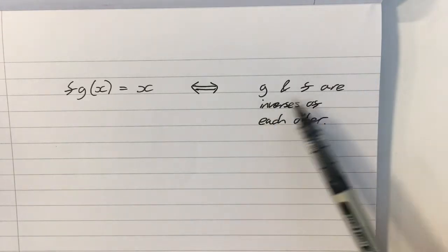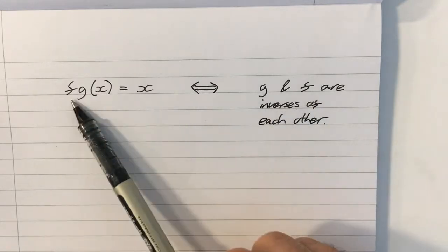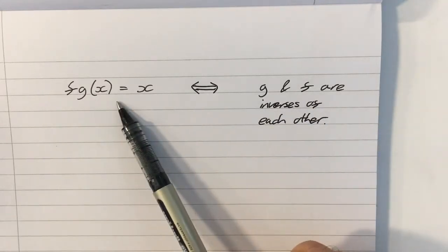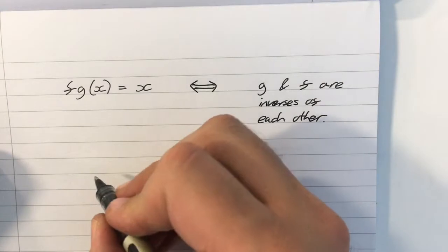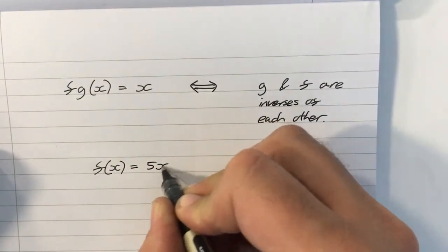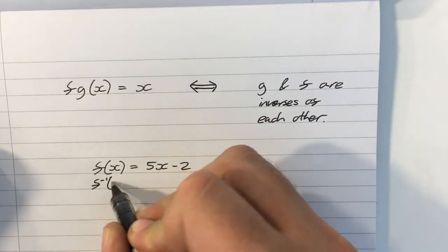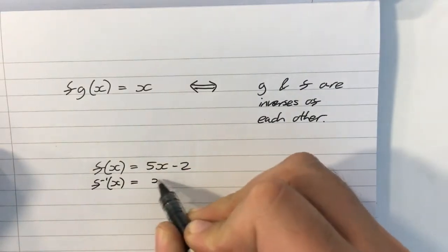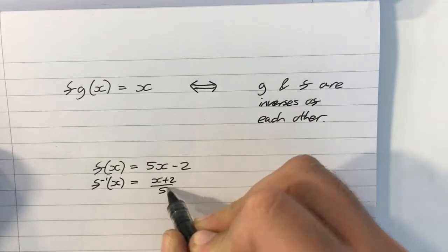Similarly, if you have two functions that are inverses of each other, then that is also true. Go back to our example that we had a minute ago. We had f of x was equal to 5x minus 2, and we had found that f to the minus 1 of x was equal to x plus 2 over 5.